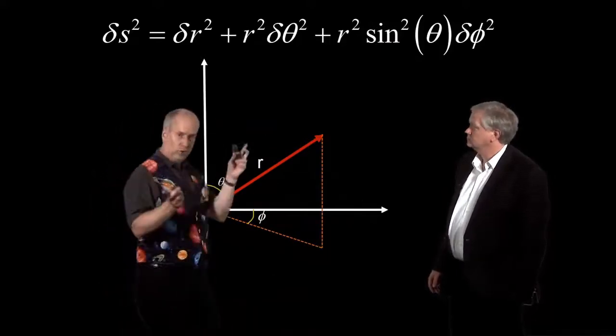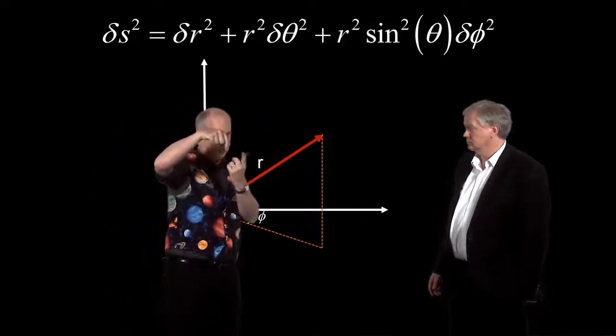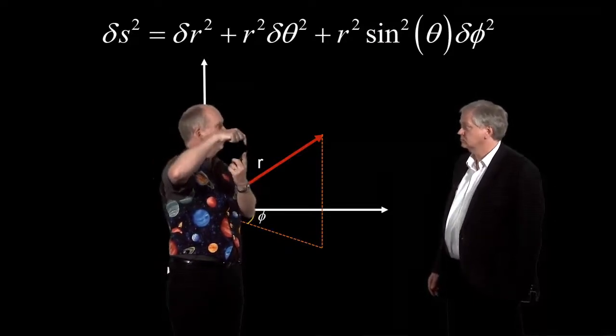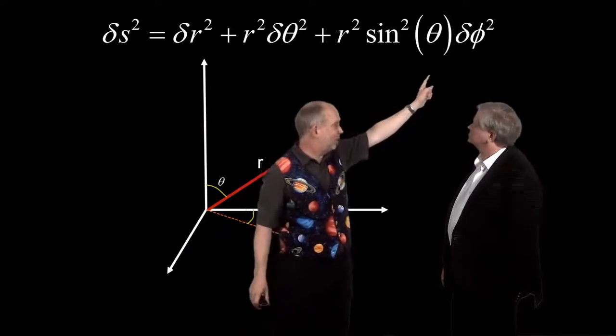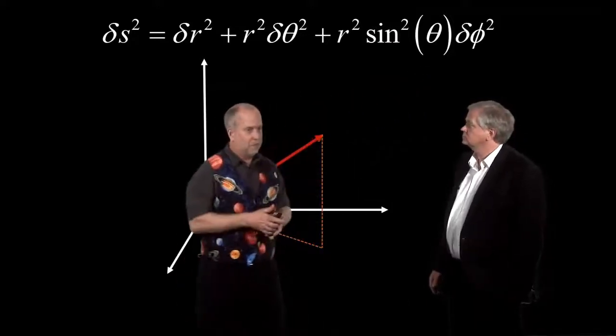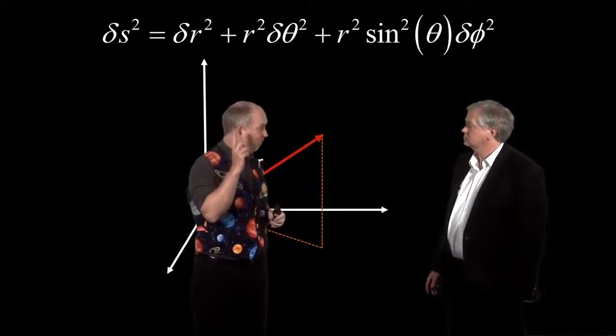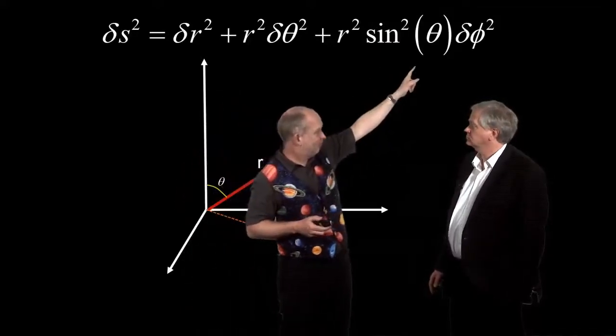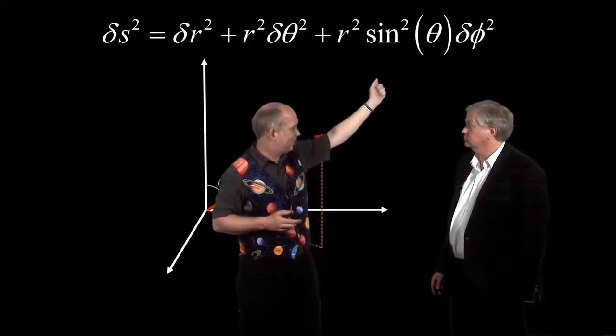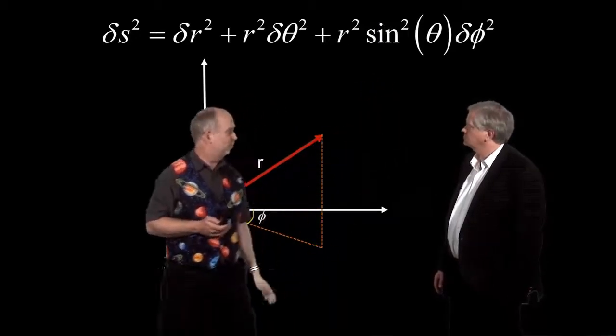But as you get closer and closer to the poles, it takes less distance to circumnavigate the world at plus 89 degrees than it does at the equator. And that's factored in by the sine squared theta over here. In fact, if you're actually at the north or south pole, you can circumnavigate the entire world without moving at all, because theta is zero or 180 degrees, sine of that is zero, and so there's no distance moved.